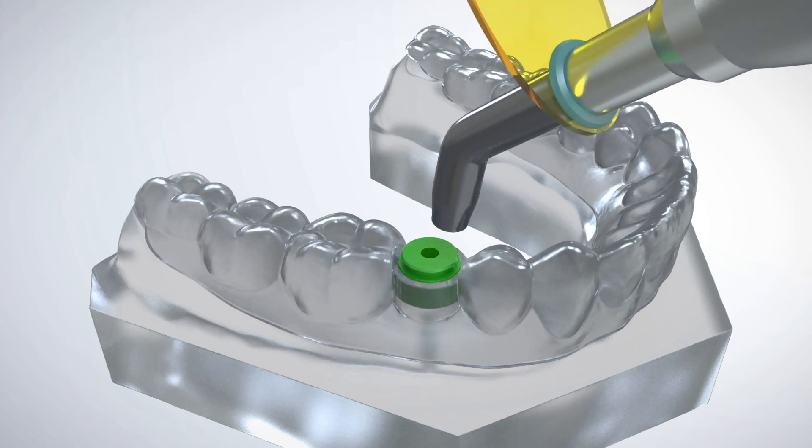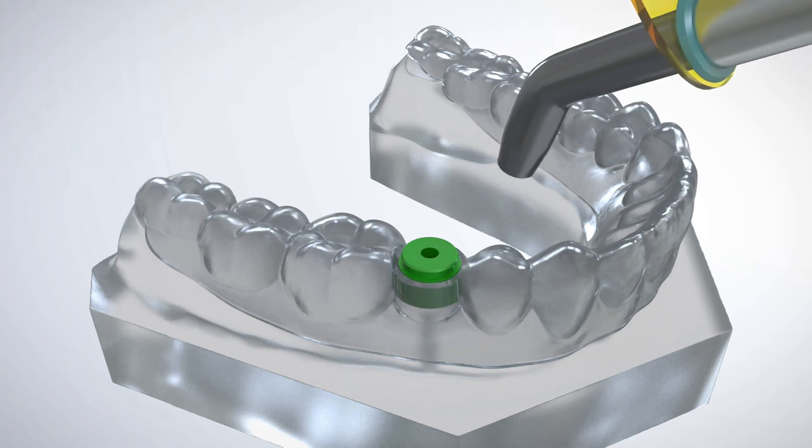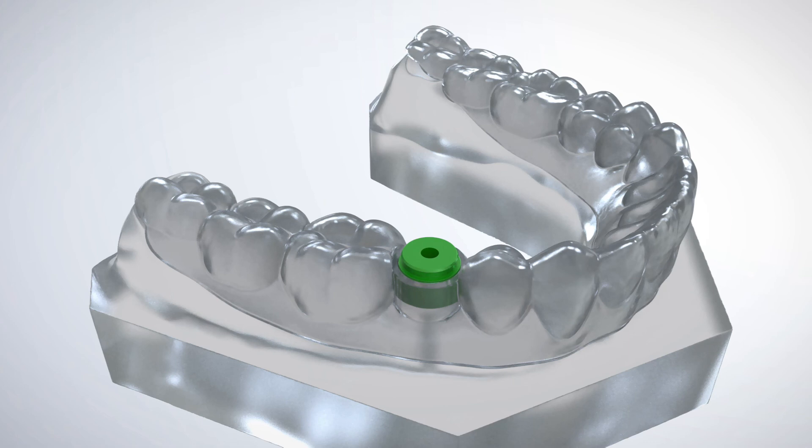A dental light cures the adhesive to create a strong bond between the GRS ring and surgical guide. The GRS surgical guide analog is simply removed using the IR tool. The surgical guide is now ready to receive all GRS drill sleeves.